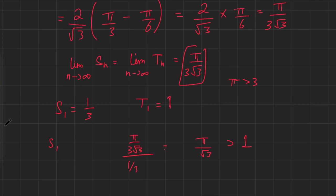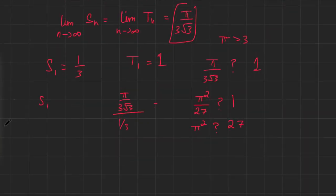What about it being greater than 1? Well, π over 3 root 3, let's just say I had to compare it with 1. If I did square both sides, I'd get π² over 27 versus 1. We know π² is less than 27 because π is less than 4, so we know that this should be less than.